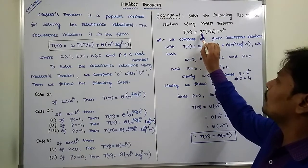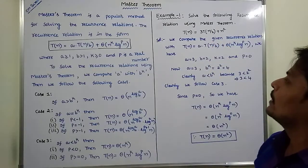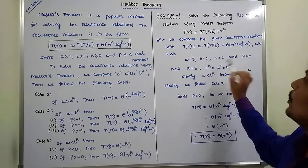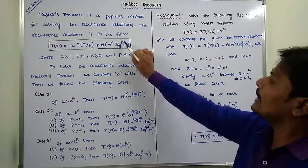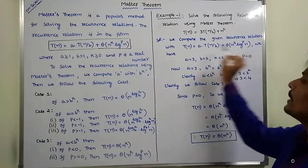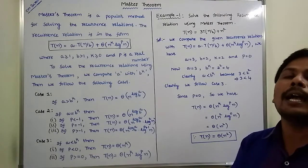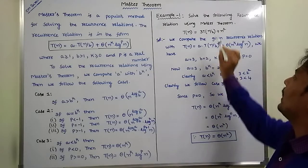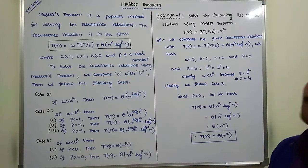A is equal to 3, B is equal to 2. For n^k, the k value is 2. The log^p n term is not present, so p is equal to 0. Now check the relation between A and B^k: A equals 3, B^k equals 2² which is 4.